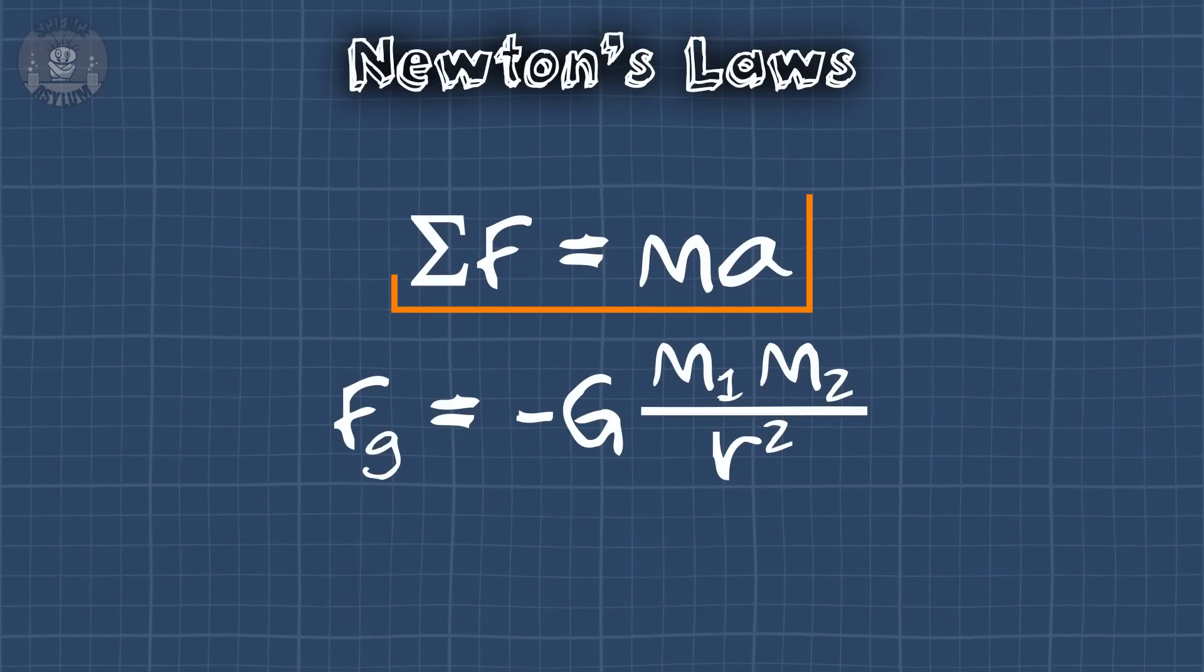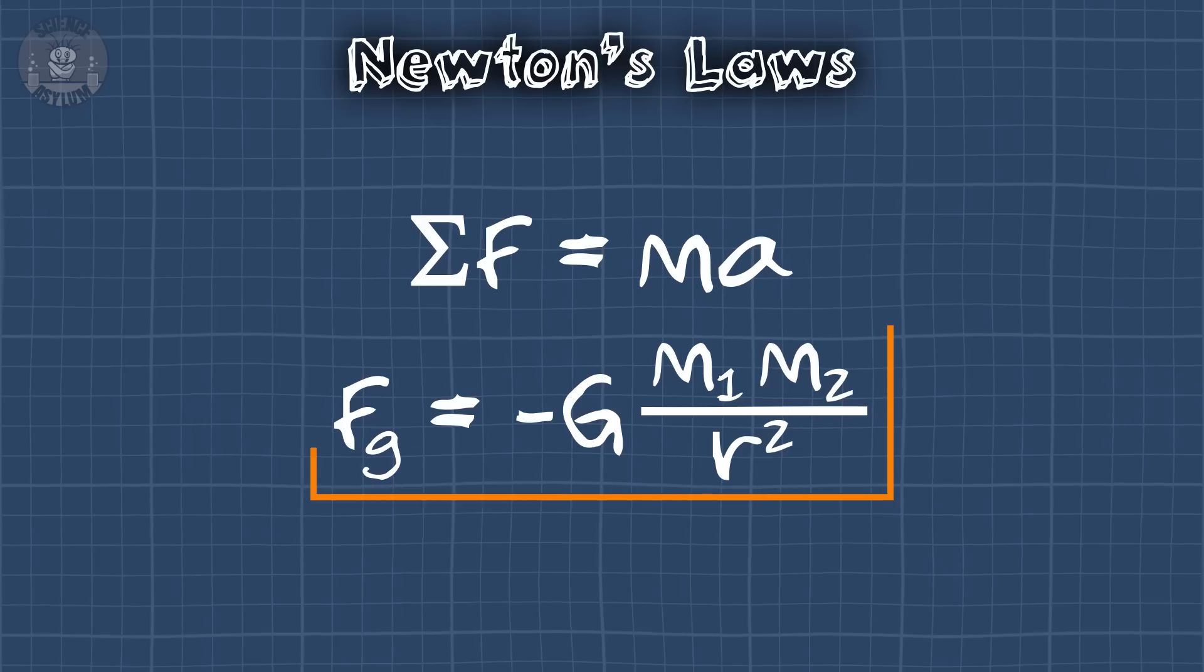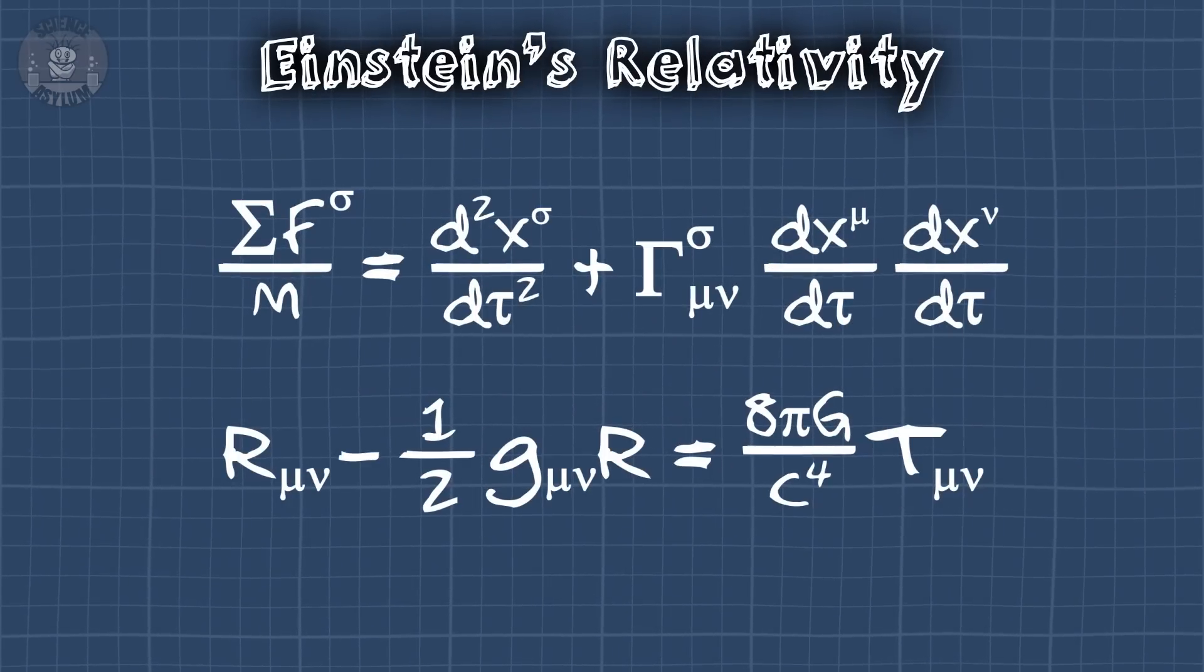In relativity, Newton's second law of motion and his law of gravity have been corrected to more closely match the universe. But there's a consequence to this correction. Like a lot of things in relativity, mass is relative to the observer. That means it depends on who or what is measuring it.